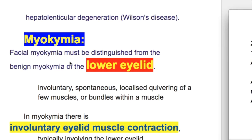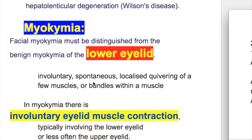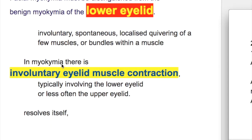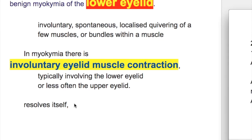Facial myochemia must be distinguished from benign myochemia of the lower lid — involuntary, spontaneous, localized twitching of a few muscles or bundles within a muscle of the lower lip. In myochemia, there is involuntary eyelid muscle contraction, typically involving the lower eyelid or less often the upper one.